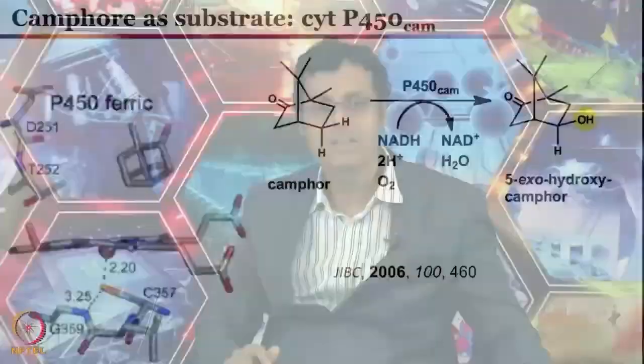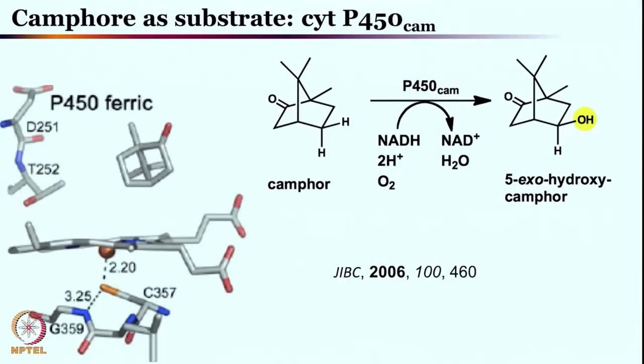So far we have seen that these reactions are quite powerful. Even with camphor as the substrate — which can be crystallographically characterized — hydroxylation can be carried out quite easily by utilizing this enzyme. We will come back and discuss this beautiful reaction with respect to cytochrome P450 activity. Keep studying, and we will start with the camphor substrate in the next class. Thank you very much.